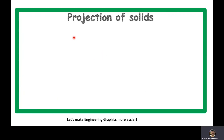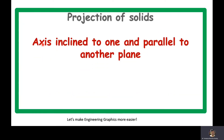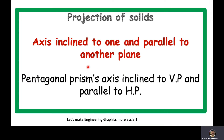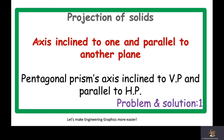Good morning, dear students. Welcome to the discussion on projection of solids. Under this, we are discussing the concept of solid axis inclined to one plane and parallel to another plane. Specifically, we are solving a problem on a pentagonal prism with its axis inclined to the VP and parallel to the HP. This is the first problem under this concept.